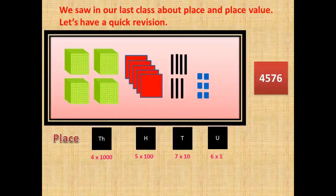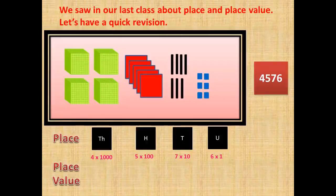For place value we multiply that number into the house which they are in. So 4 in the thousands place gives us 4000.